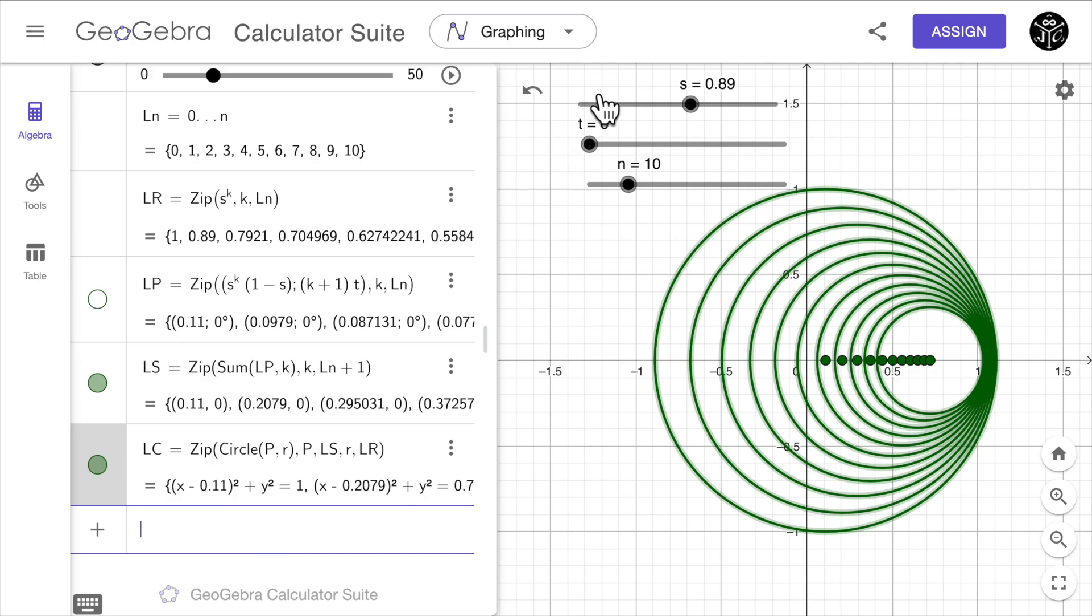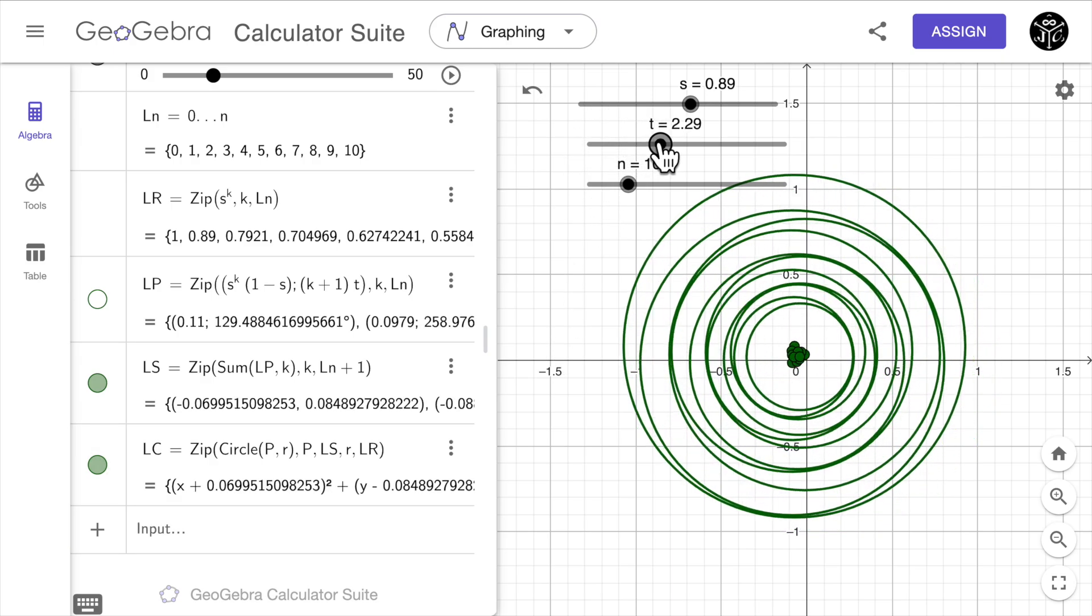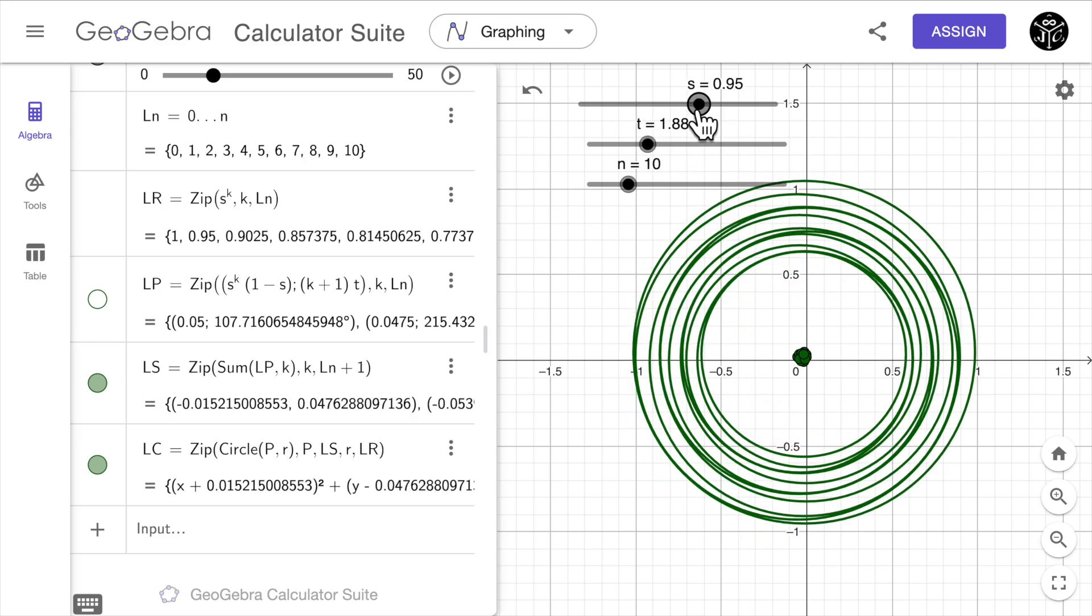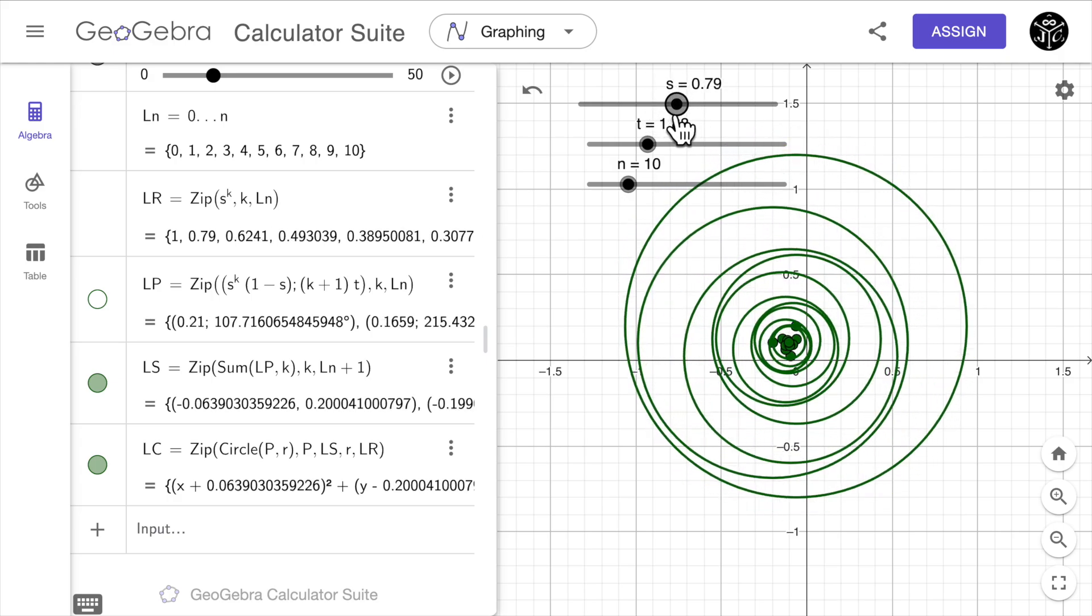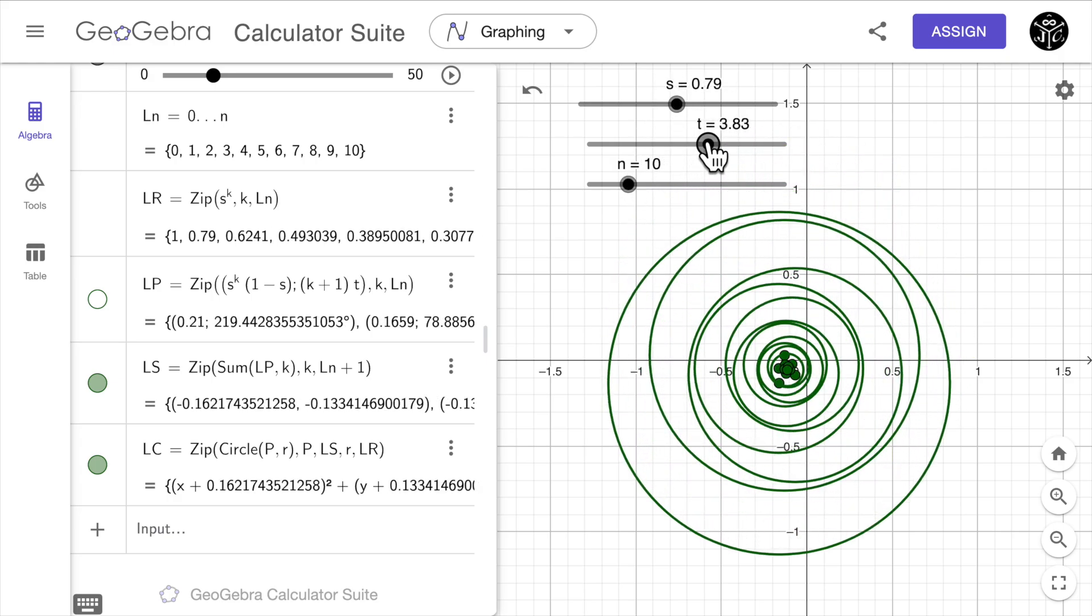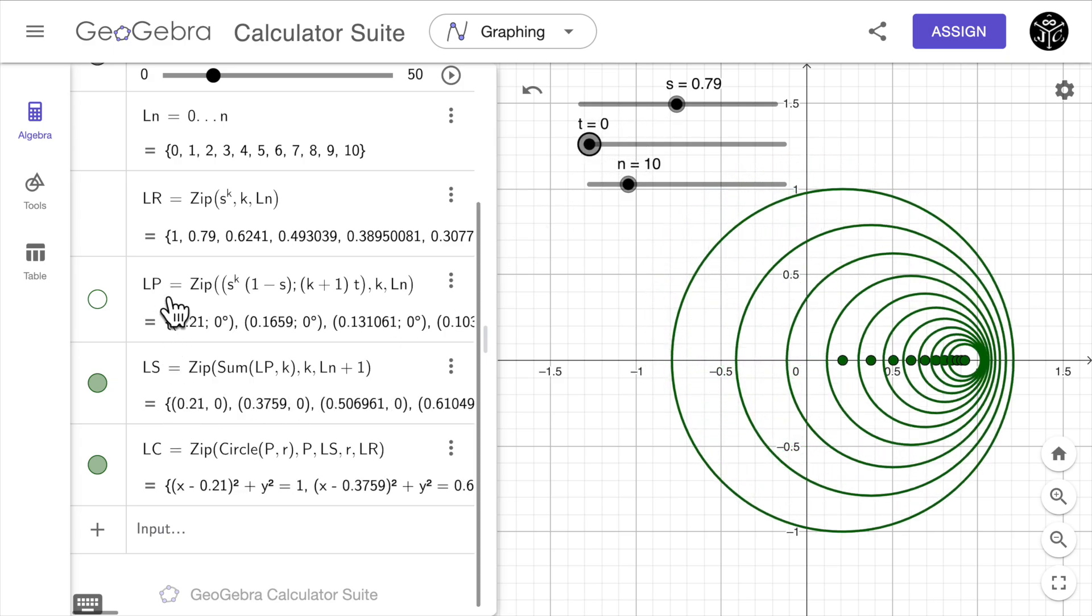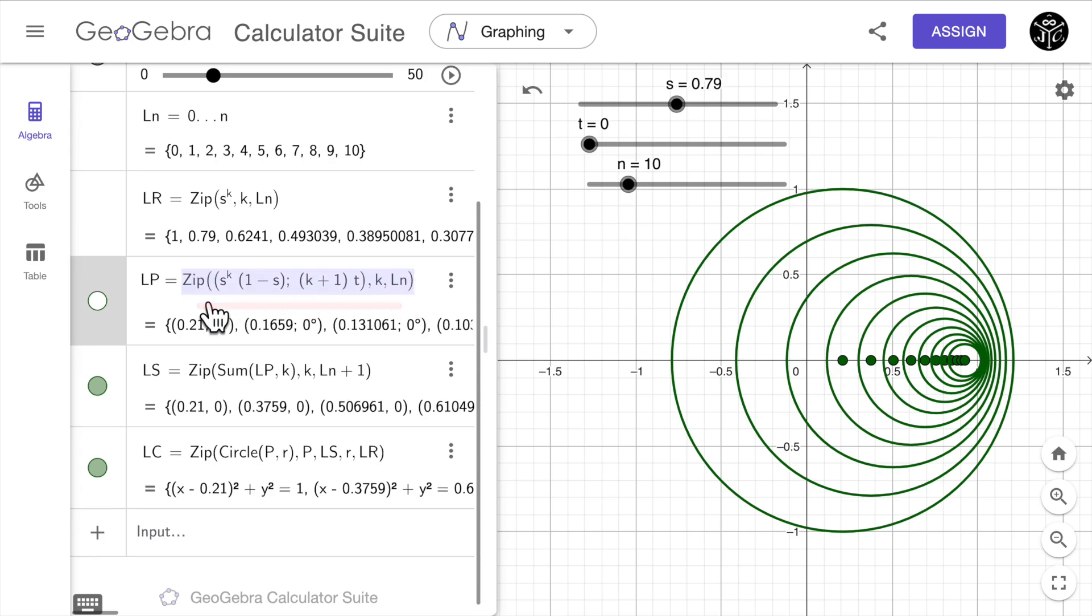This almost looks to what we're looking for but there is an issue. If we change the value of t notice that every circle moves around the origin. Also when the scale factor changes all the circles seem to change of position. In our constructions we must have the first circle fixed to the origin. This is what is missing in the list lp that I defined previously. We can fix this issue by simply adding the origin in our list lp.